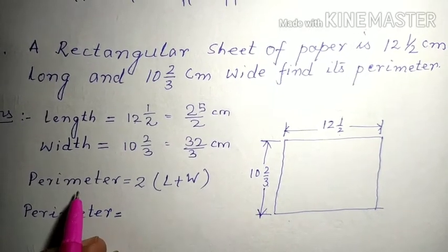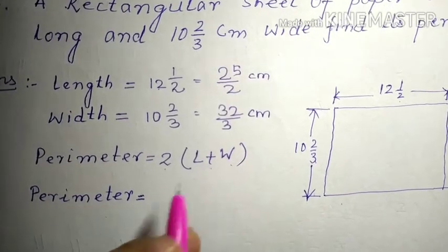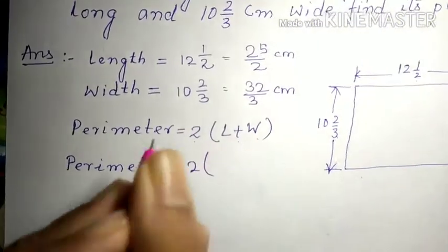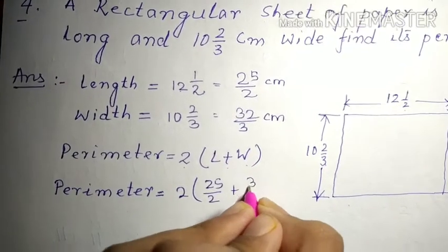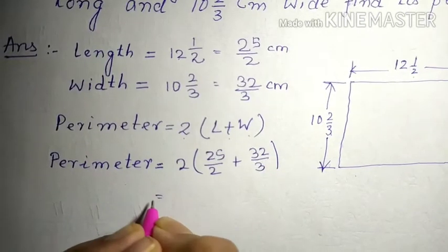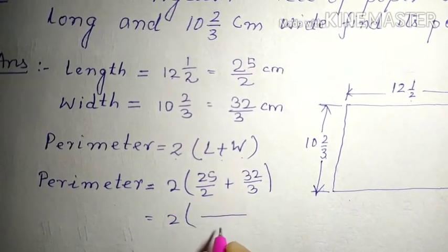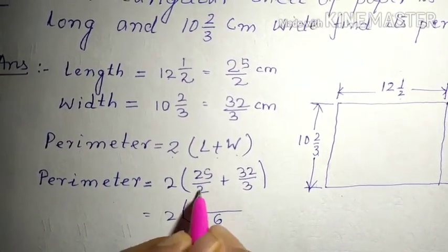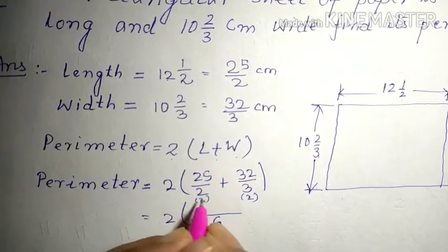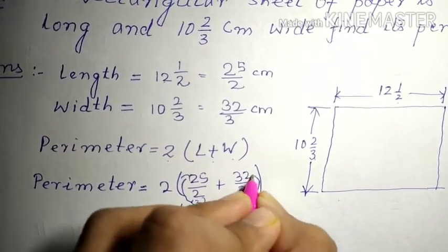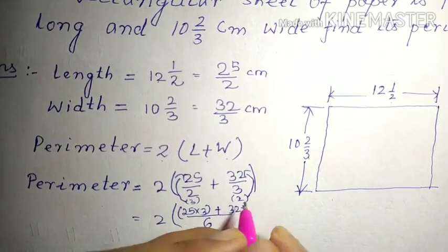Now it has been told to find the perimeter. So to find the perimeter the formula is 2 into length plus width. So now let's put this formula. So perimeter = 2 into length, it is given 25/2 plus width, it is given 32/3. Now we have to first find the addition of these two. So the LCM of the denominator is 6. So in 2's table, 6 comes 3 times and in 3's table, 6 comes 2 times. Now we have to multiply this bracket number with the numerator same as this also.